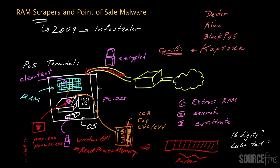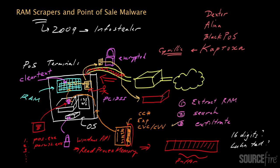At this stage, the RAM scraping malware can identify candidate credit card data stored in the memory of the point-of-sale terminal. This candidate data can be stored in a file on the POS terminal itself until it's ultimately exfiltrated. For the final step — exfiltration — one approach is for the attacker to physically access the system and copy that file, though this doesn't scale well. A more scalable approach is to use the network connection on the POS terminal, either accessing it directly or having the RAM scraping malware transmit the file to another system more readily accessible to the attacker.